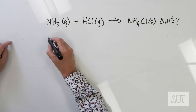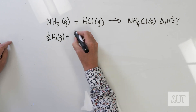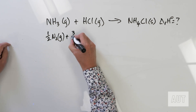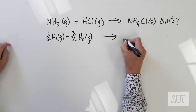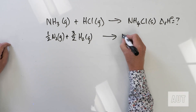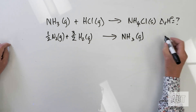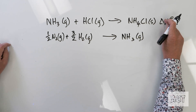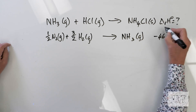Remember, it's the formation of one mole of compound from its elements in their standard state. So for ammonia, that's going to give you one half N2 gas plus three halves H2 gas, going to one mole of NH3 gas, and that has a delta RH of minus 46.19 kJ per mole.